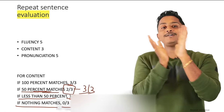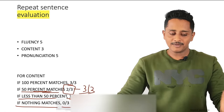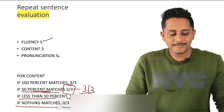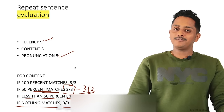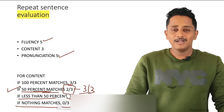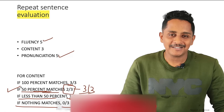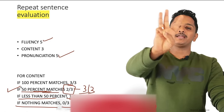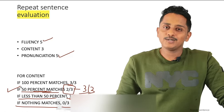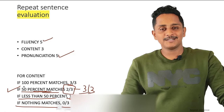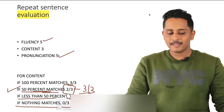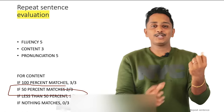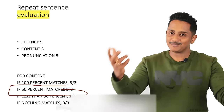One repeat sentence gives you 5 fluency + 3 content + 5 pronunciation = 13 marks, converted to 3. From my experience, if you are fluent, open your mouth and speak with crisp clarity, you will get 5 out of 5 fluency and 5 out of 5 pronunciation. If at least 50% is matching, you get 3 out of 3 content — for both speaking and listening.